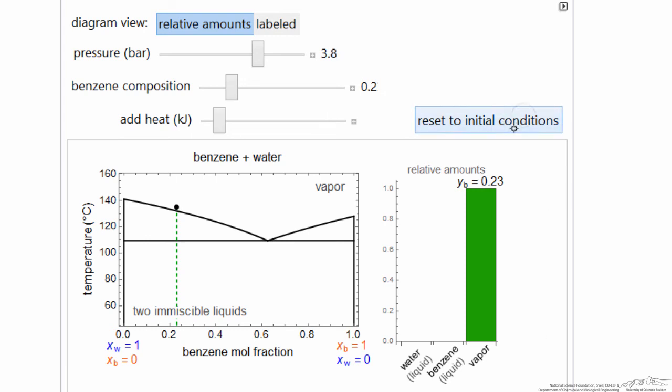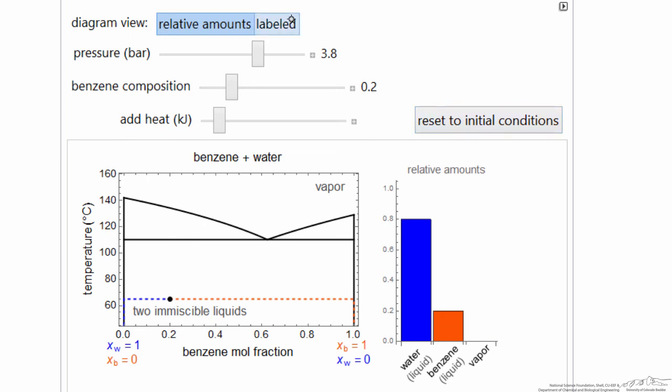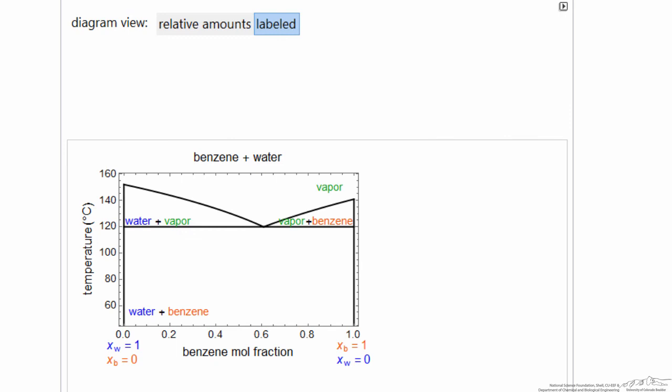You can reset to those initial conditions. If you select this button, this just shows, there's no sliders now, this just demonstrates which phases are present in each of these regions.